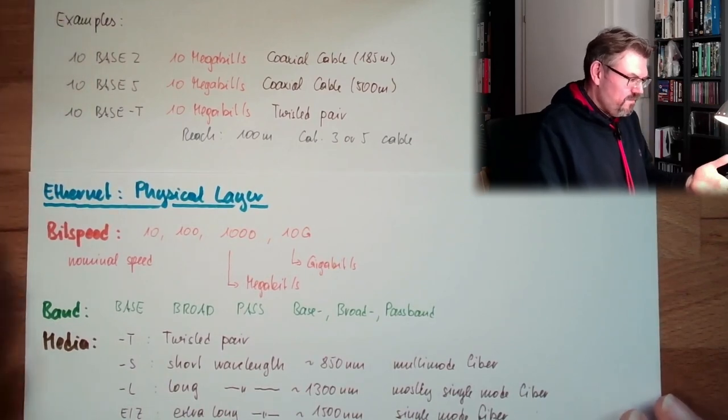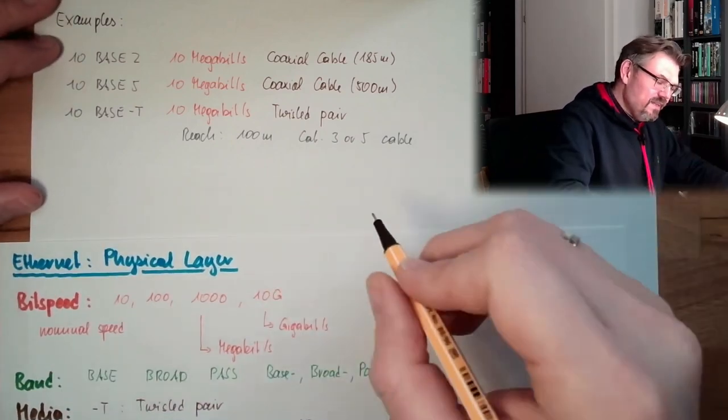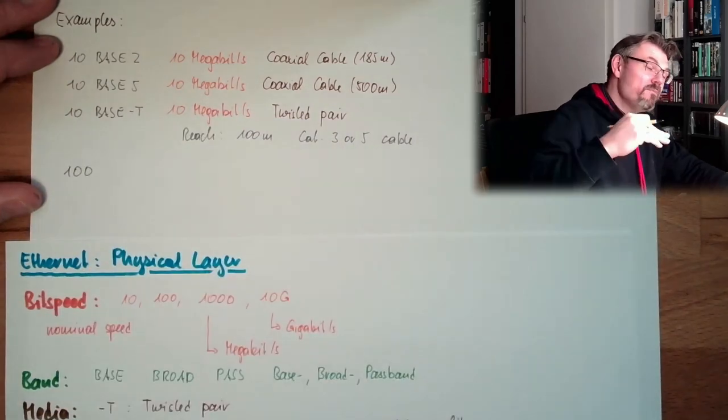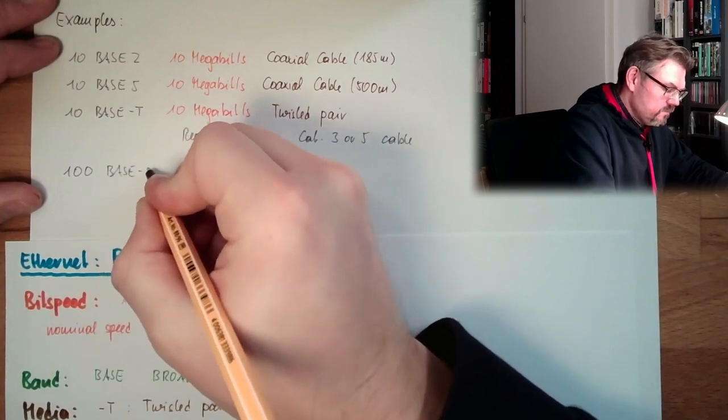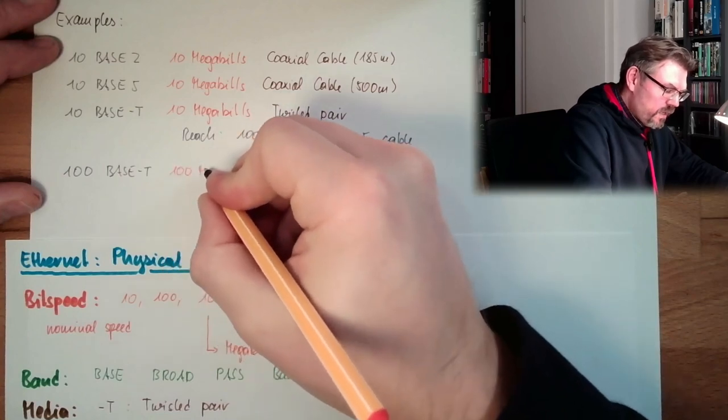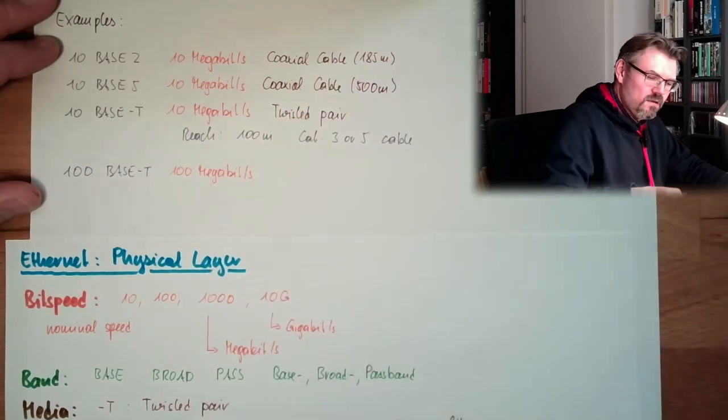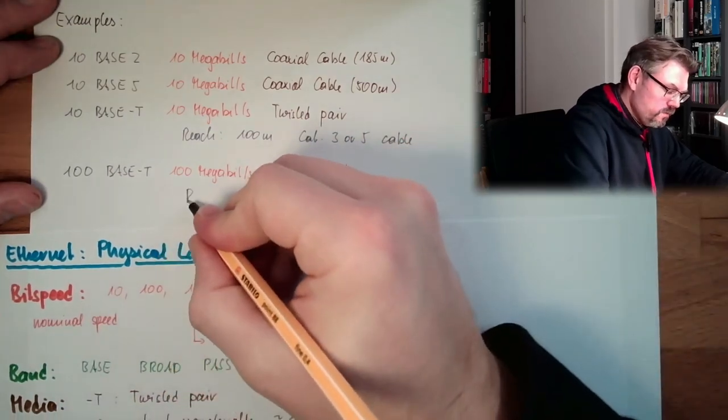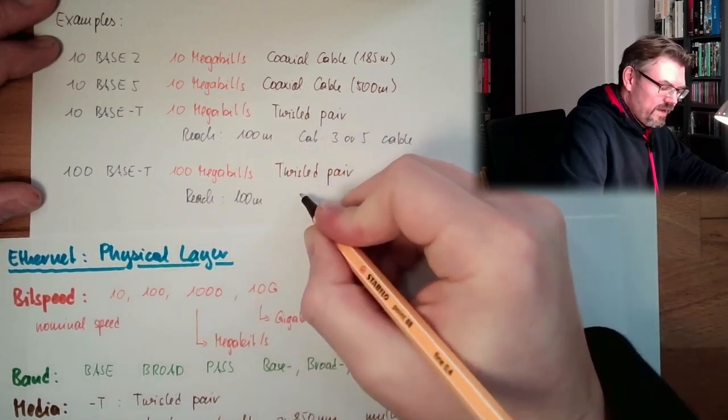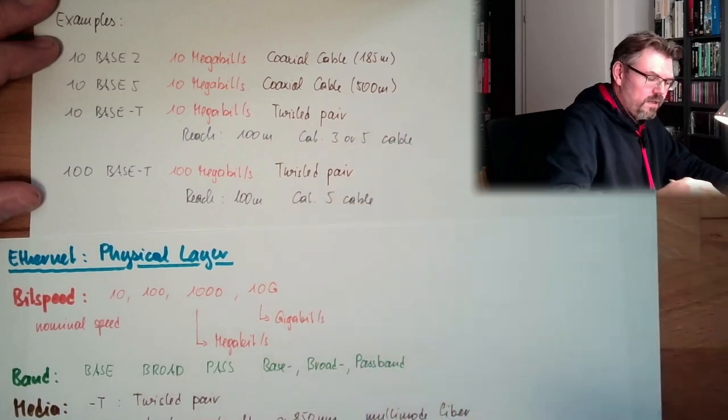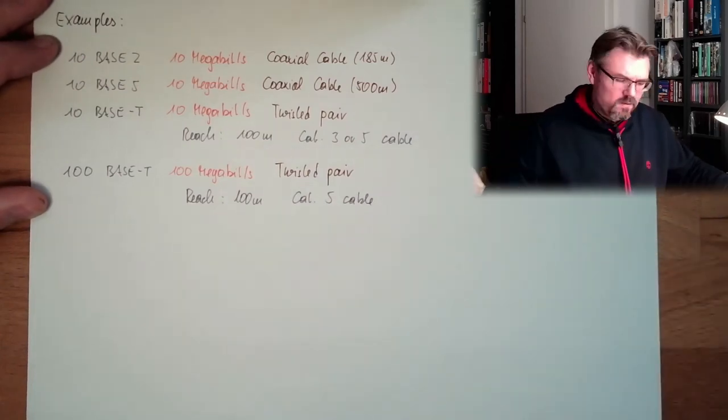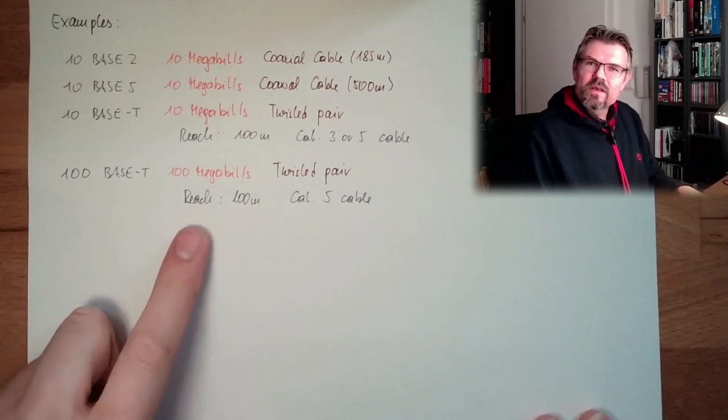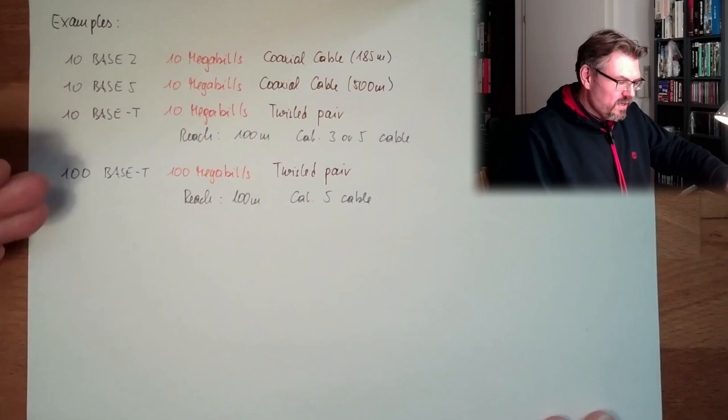Things still in use, this is more or less obsolete. Things, an example which is still in use but also on declining, very much declining, 100BaseT. There we had 100 megabit per second, twisted pair cable. The reach is again 100 meter, and here we need a category 5 cable. Category 3 is no longer working. Where is now the difference? The difference is the coding. Here we have a more efficient coding. Here it's Manchester coding, and here it's a more efficient coding.